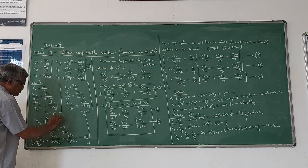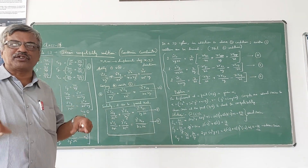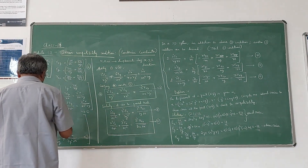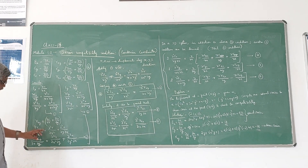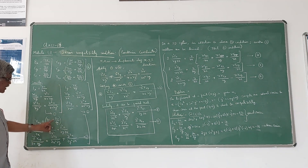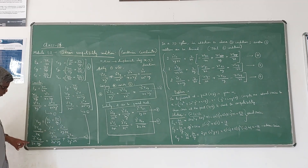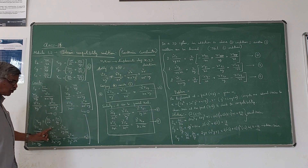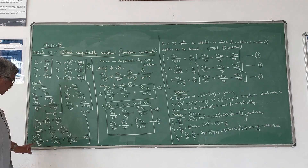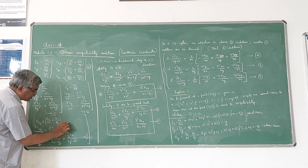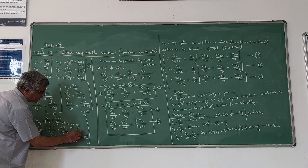The third equation involves Gamma XY. Gamma XY by definition is dou V by dou X plus dou U by dou Y. I will differentiate Gamma XY first partially with respect to X, then differentiate the result partially with respect to Y. Differentiating with respect to X gives dou square V by dou X square plus dou square U by dou Y dou X. Differentiating once more with respect to Y gives dou square Gamma XY by dou X dou Y equals dou cube V by dou X square dou Y plus dou cube U by dou Y square dou X.